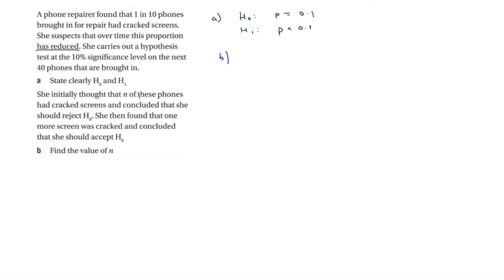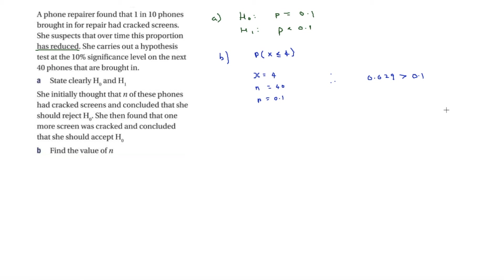We need to find the critical value. She initially thought N phones had cracked screens and concluded she should reject H0, then found one more screen was cracked and concluded she should accept H0. We start by testing P(X ≤ 4): using x = 4, n = 40, p = 0.1, that equals 0.629 — much greater than 0.1, so that's way too high and x = 4 would be in the acceptance region.